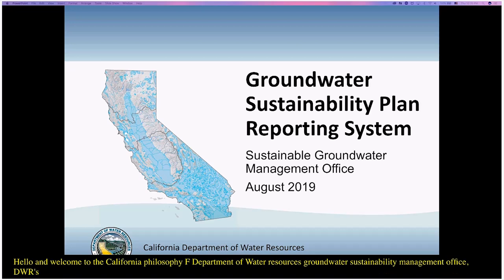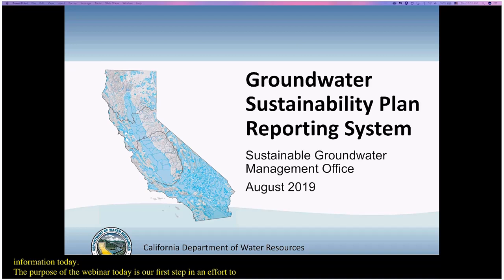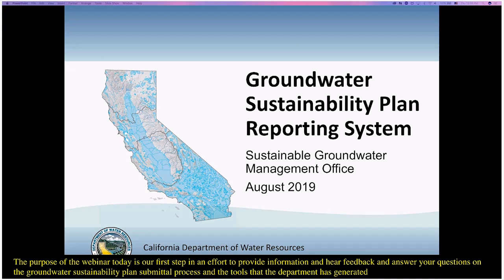My name is Steven Springhorn. I'm a member of the Sustainable Groundwater Management Office's team in Sacramento. I'm joined by my colleagues Heather Shannon, Ben Gooding, and Monica Reese, who will be helping present information today. The purpose of the webinar today is our first step in an effort to provide information and hear feedback and answer your questions on the Groundwater Sustainability Plan submittal process and the tools that the Department has generated to facilitate that process.